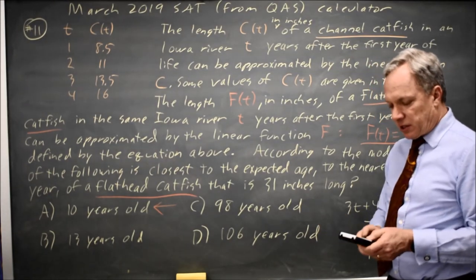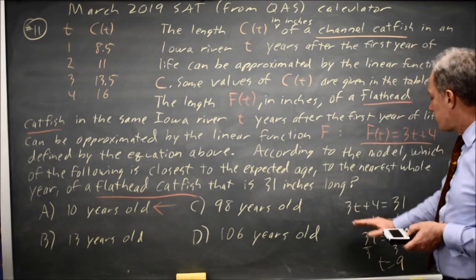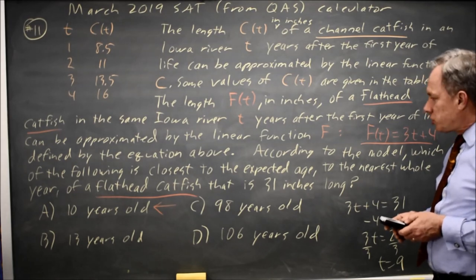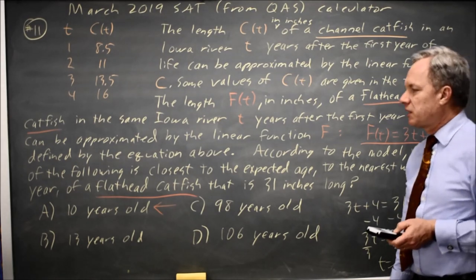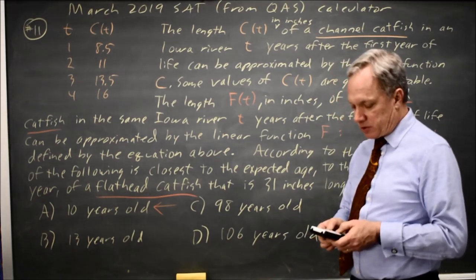Now let's do it on the calculator. I go to y equals. Any time you have an equation with only one variable, you can put the left side in y1, the right side in y2. Choose an x window that includes any possible answer. So I want a number bigger than 106, I chose 120 for my x max.